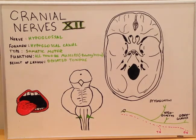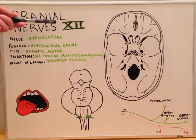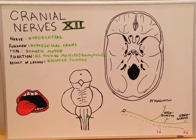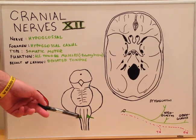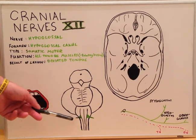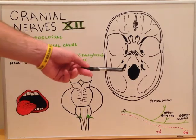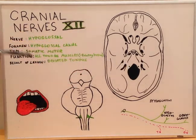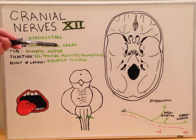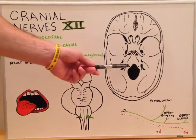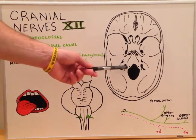Today's lecture concludes our series on the cranial nerves with cranial nerve number 12, the hypoglossal nerve. The hypoglossal nerve arises from the medulla oblongata and continues its short course anteriorly through the hypoglossal canal, right here near the foramen magnum.